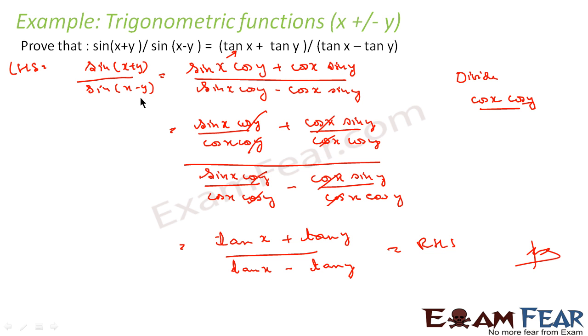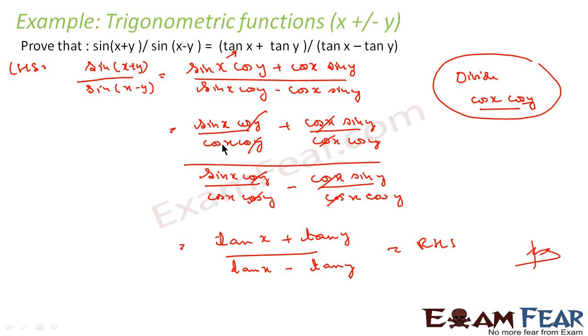So what we have done is expanded sin(x+y) / sin(x−y) and divided by cos x · cos y, because we wanted to have the sin x / cos x form — that is, the tan x form — and thereby proved the identity.